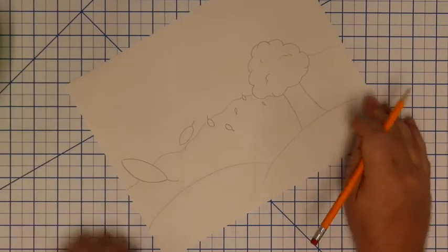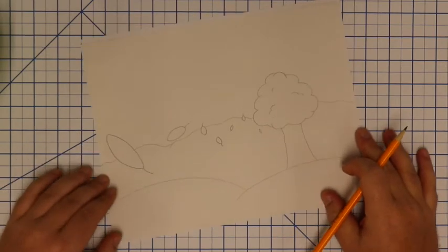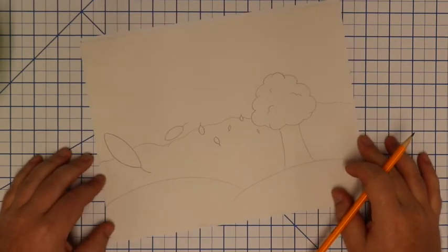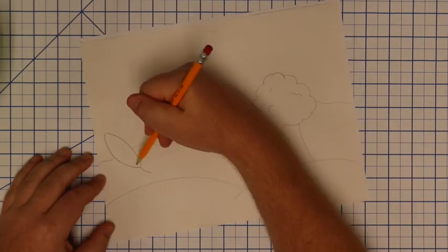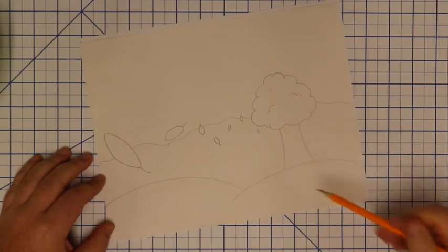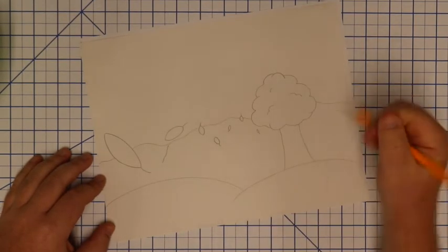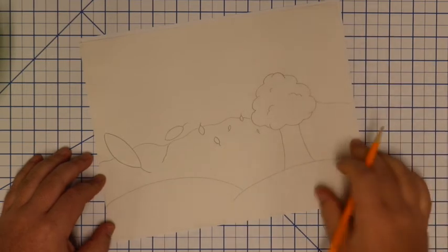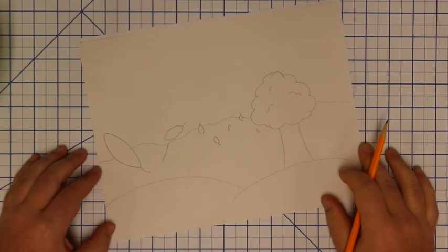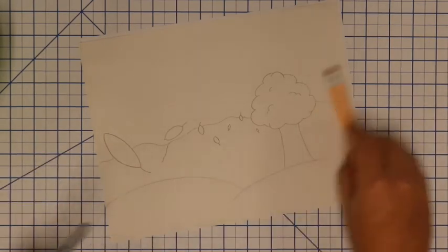Alright, so I am gonna go ahead and trace and I'll do that kind of quick so we can get back to it. Now would be the time to add some details, like the lines going through our leaves, maybe some texture on the tree. And that's something I'm gonna do while I trace, but you should probably go ahead and do it with the pencil. I'll just be doing it when I trace to make sure I don't take up a whole lot of your time.